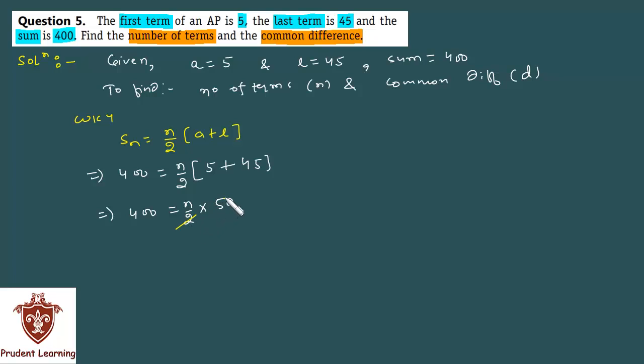Cancel 2 by 2, 25 times, which gives you n is equal to 400 upon 25, which is equal to 16. So the value of n is finally 16. One thing you found out.